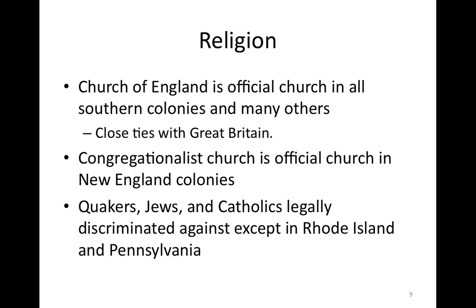In the New England colonies, the Congregationalist or Puritan church was the official church in places like Massachusetts and Connecticut. And in all colonies except a couple, there was persecution of Quakers, Jews, and Catholics — except in Rhode Island and Pennsylvania, where religious freedom was most strongly guaranteed.